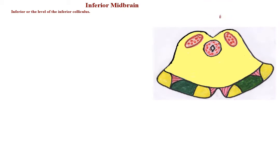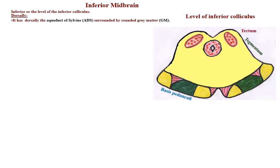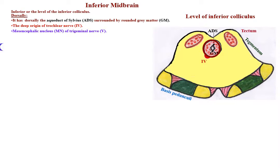Inferior midbrain, or level of the inferior colliculus. Dorsally it has the aqueduct of Sylvius surrounded by nearly rounded gray matter. There is the deep origin of the trochlear nerve, the fourth cranial nerve, and the mesencephalic nucleus of the trigeminal nerve, the fifth cranial nerve.